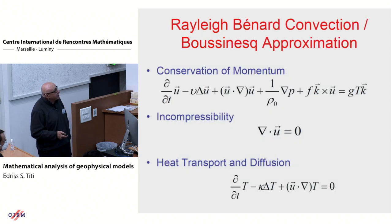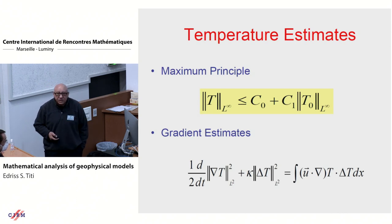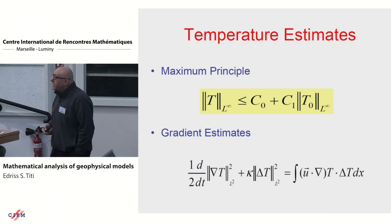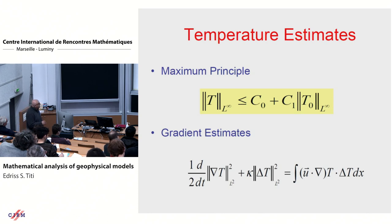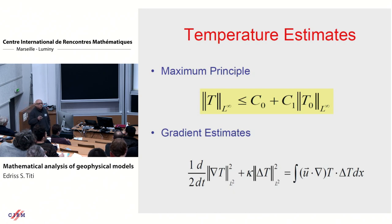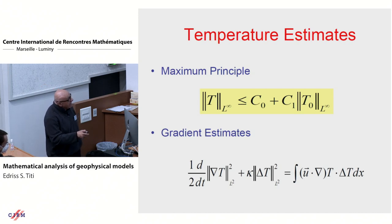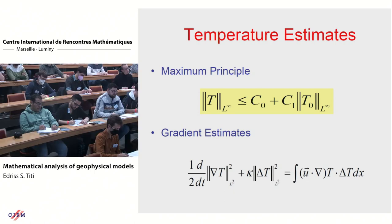Now I would like to understand what happens to the gradient of the temperature. Formally, I multiply the temperature equation by minus the Laplacian and integrate by parts over the domain. Using boundary conditions, I get the L^2 norm of the gradient evolution: one term coming from the diffusion and one from the nonlinearity. I need to estimate the nonlinearity term. I will do some manipulation, and if I don't succeed, I will have to use brutal estimates.